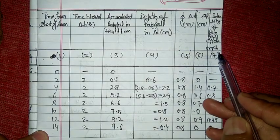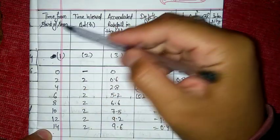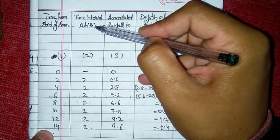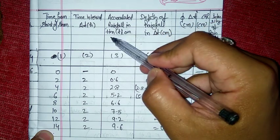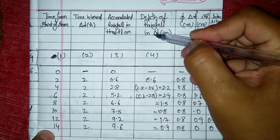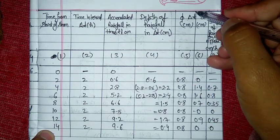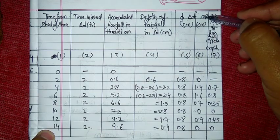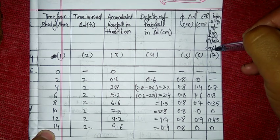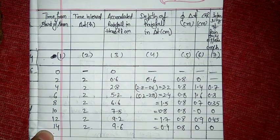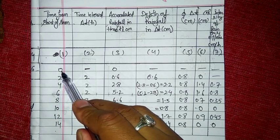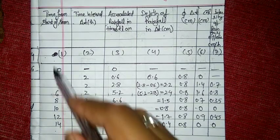The table consists of seven columns. Column 1: time from the start of the storm. Column 2: time interval delta t. Column 3: accumulated rainfall at time t. Column 4: depth of rainfall in delta t. Column 5: phi × delta t (phi index multiplied by time interval). Column 6: effective rainfall in centimeters. Column 7: intensity of effective rainfall in centimeters per hour.